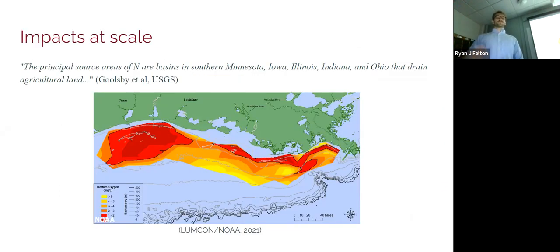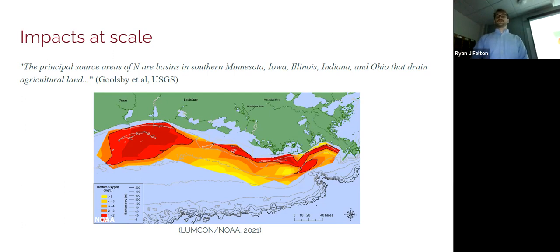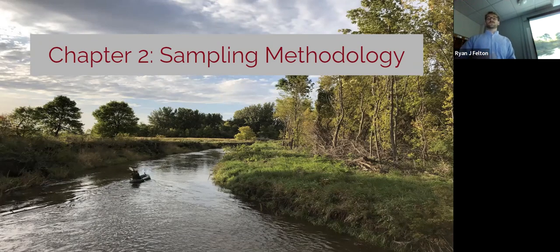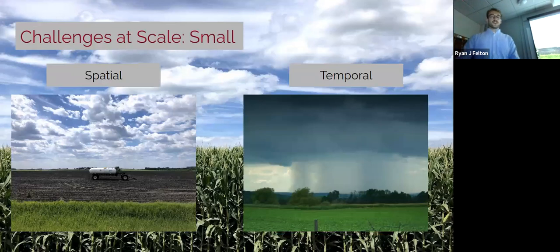At scale, all of these watersheds are connected to broader catchments like the Mississippi River Basin. The principal source areas of nitrogen are basins in southern Minnesota, Iowa, Illinois, Indiana, and Ohio, which drain agricultural land. Nutrients transported through this watershed chain can cause hypoxic zones in the Gulf of Mexico, posing economic and ecological threats. Conservation practices represent a large cost — both implementing intense measures like bioreactors and removing land from production with buffer strips. There are also agricultural costs associated with not using nitrate efficiently, and local public health impacts like high nitrate in drinking water, including blue baby syndrome.